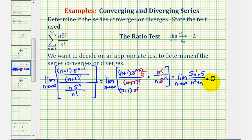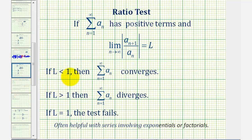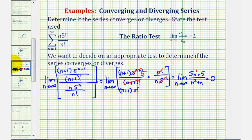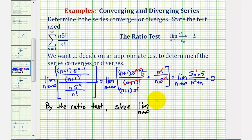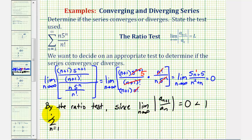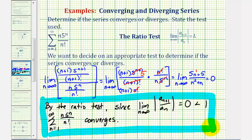Since this limit is equal to zero, and zero is less than one, our series converges. By the ratio test, since the limit as n approaches infinity of the absolute value of a sub n plus one divided by a sub n is equal to zero, which is less than one, our given series converges. I hope you found this helpful.